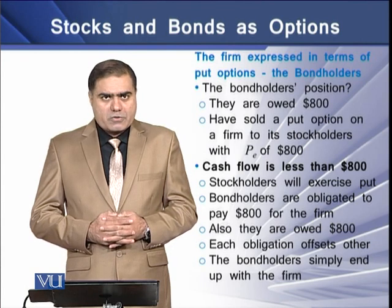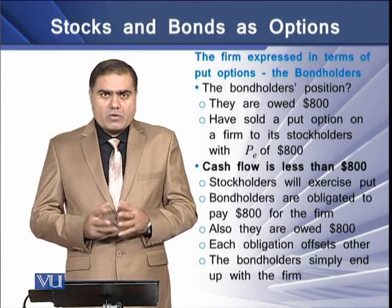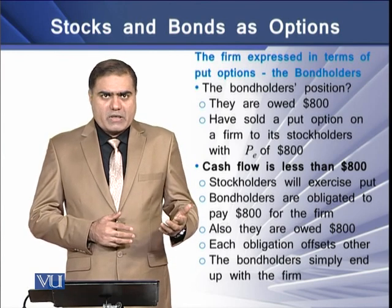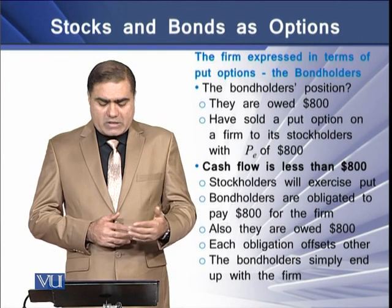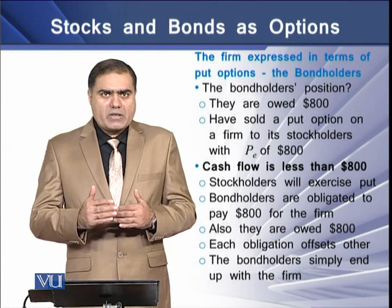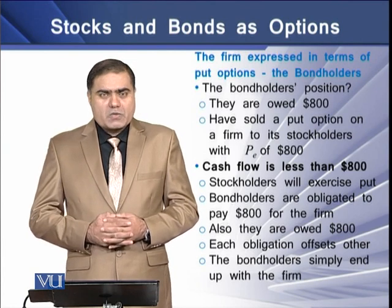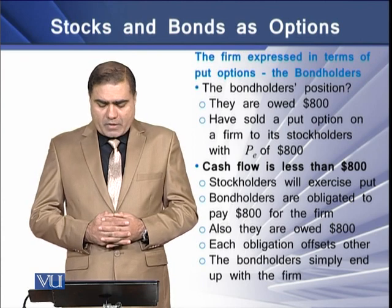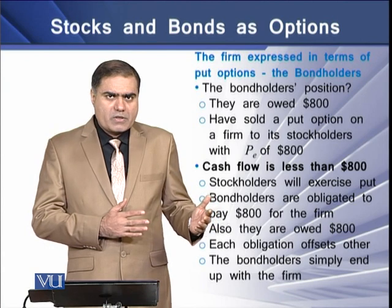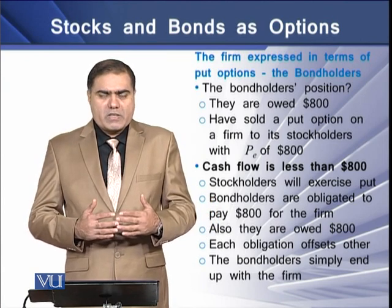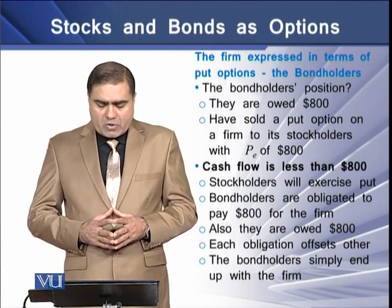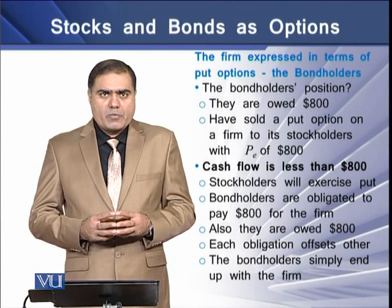Bondholders are then obligated to pay $800 for the firm, and they are also to receive their debt amount of $800. In this case, both parties are paying each other the equal amount of $800. These two amounts cancel each other out, and as a result, the bondholders simply end up with the firm.